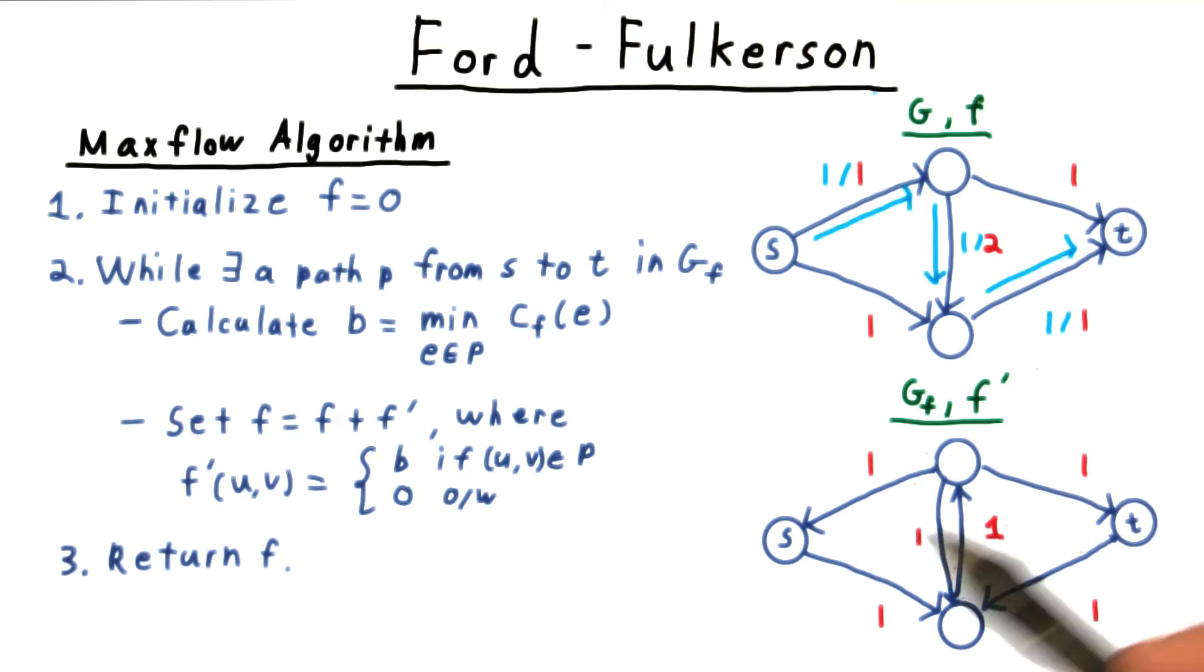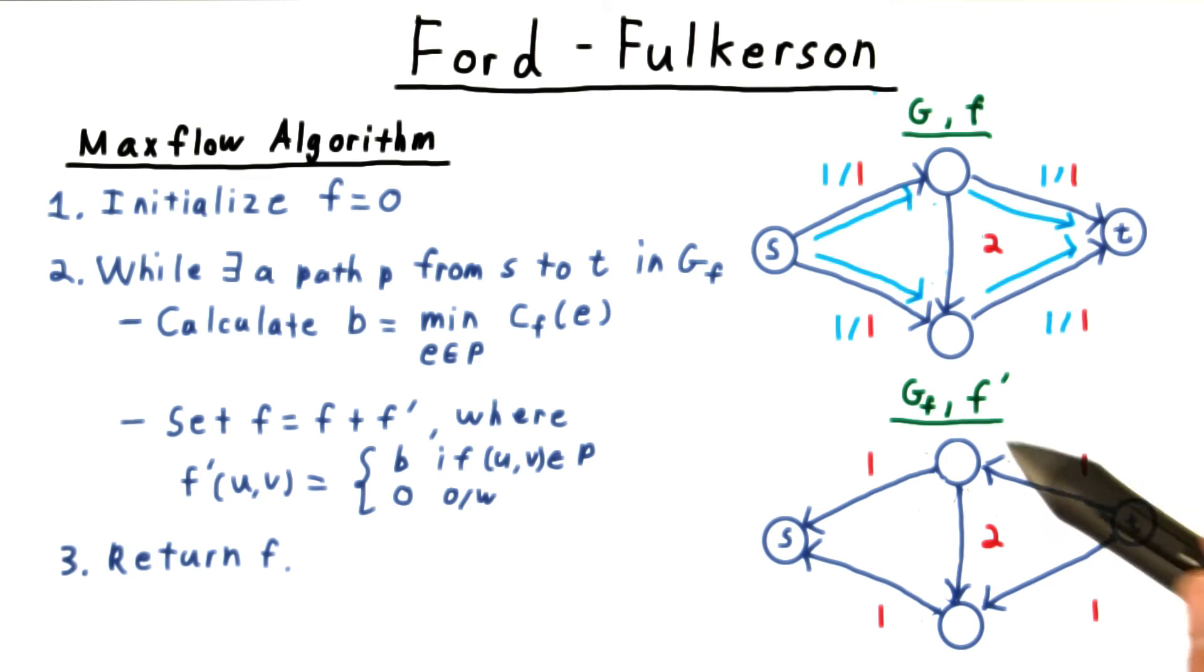The result is a new flow and a new residual graph. Here, there's only one ST path. So we'll go ahead and choose that. Adding it to the old flow will cause this flow across the middle to cancel out, leaving us with this flow and this residual network. At this point, there are no ST paths in the residual graph, so we're done.